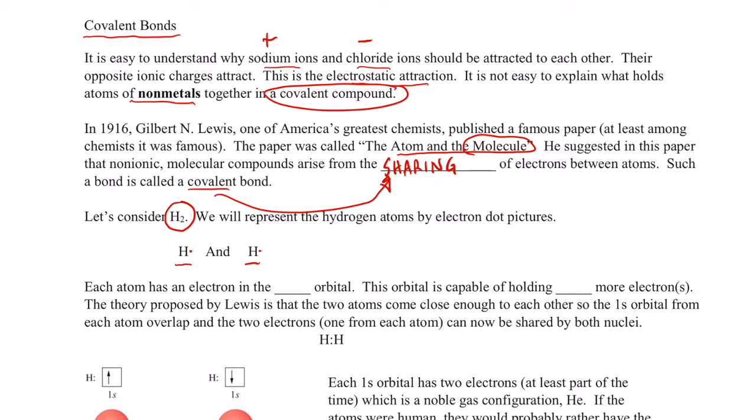So each atom has an electron in the 1s orbital. This orbital is capable of holding one more electron. Remember, hydrogen's configuration is 1s1. Well, we can hold two electrons in that 1s orbital. In fact, when it does hold two electrons in that 1s orbital, it becomes like helium, doesn't it? A noble gas configuration.